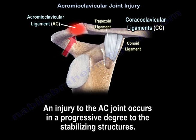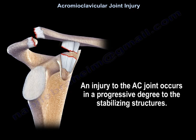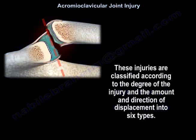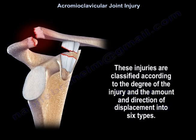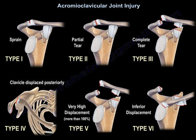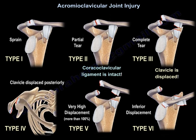An injury to the AC joint occurs in a progressive degree to the stabilizing structures. These injuries are classified according to the degree of injury, the amount, and the direction of displacement into six types: Type 1 is a sprain; Type 2 is a partial tear with the coracoclavicular ligament intact; Type 3 is a complete tear with clavicle displacement; Type 4 is posterior displacement; Type 5 is very high displacement, more than 100%; and Type 6 is inferior displacement.